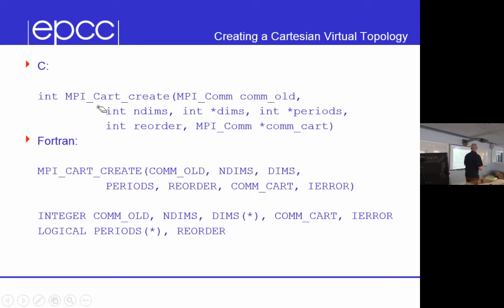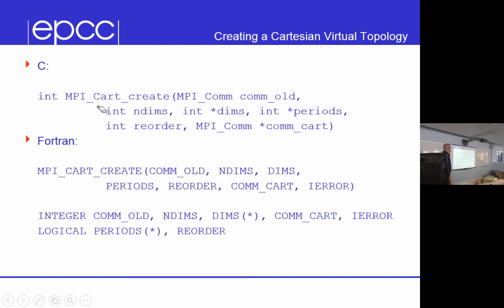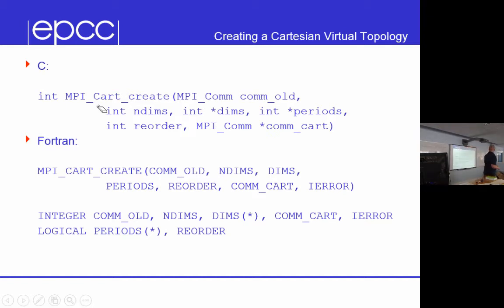You use these topologies by creating a new communicator using the function MPI_Cart_Create. It takes as parameters the old communicator, the number of dimensions of your topology, the sizes of those dimensions, the periodic boundary conditions for each dimension, whether you want it to reorder the ranks (that's a boolean — an integer 0 or 1 in C), and then it returns you a new communicator that represents the topology you've asked for.